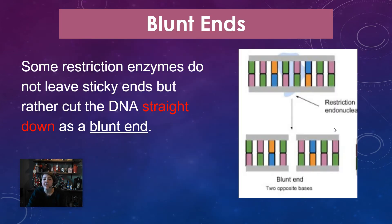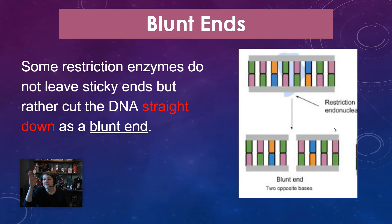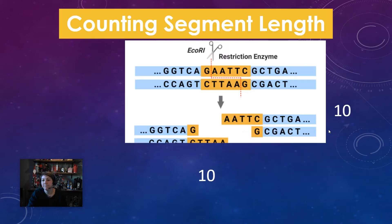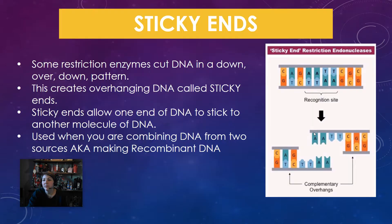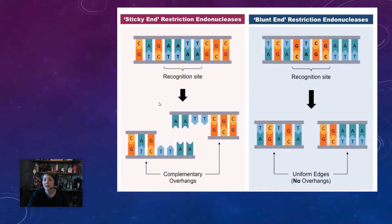Blunt ends are created when we cut straight down. A blunt end looks different — it's not sticky and won't cause the DNA to stick to other pieces of DNA. A sticky end goes down, over, down, whereas a blunt end cuts straight down and has uniform edges with no overhangs.